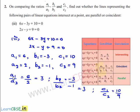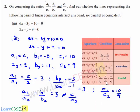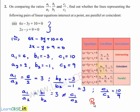If we observe, the values of a1 by a2 and b1 by b2 are both equal to 3, so a1 by a2 is equal to b1 by b2 is equal to 3. This is not equal to c1 by c2. From the third condition, since a1 by a2 is equal to b1 by b2, which is not equal to c1 by c2, we can conclude that the given set of linear equations represent parallel lines.